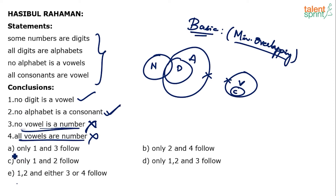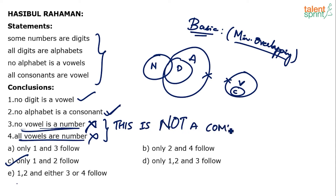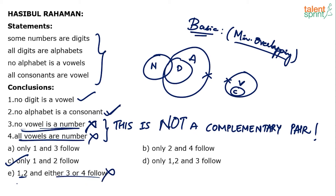The answer is option C — only one and two follow. Also remember, there is no complementary pair here. Do not consider 'no vowel is a number' and 'all vowels are numbers' as a complementary pair — that would be wrong. The two valid complementary pairs are: 'no vowel is a number' and 'some vowels are numbers', or 'all vowels are number' and 'some vowels are not numbers'. Since conclusions 3 and 4 don't form a complementary pair, either/or cannot apply.